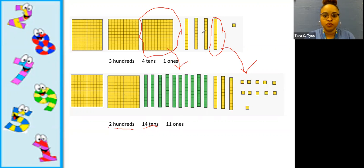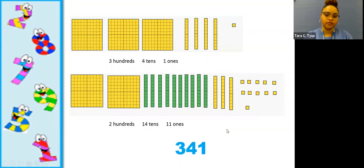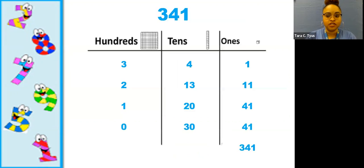Both of those ways are great in showing the number 341. So students will be able to see that there are different ways to compose three digit numbers, to make three digit numbers.